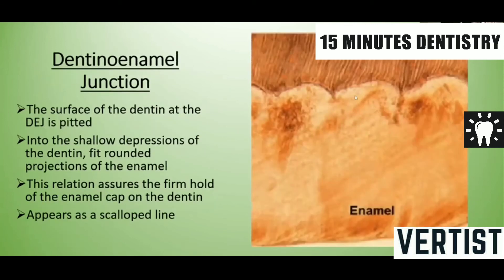The dentino-enamel junction: the surface of the dentin at the dentino-enamel junction is fitted. Into these shallow pits and depressions of dentin fit the rounded projections of the enamel. This arrangement assures a firm hold of the enamel cap on the dentin, and it appears as a scalloped line.